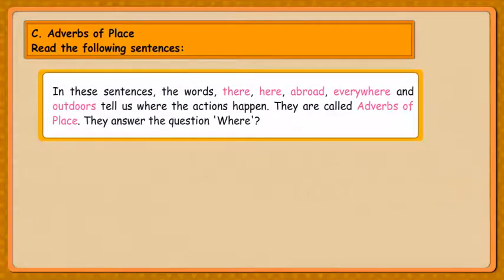In these sentences, the words there, here, abroad, everywhere and outdoors tell us where the actions happen. They are called adverbs of place. They answer the question: Where?